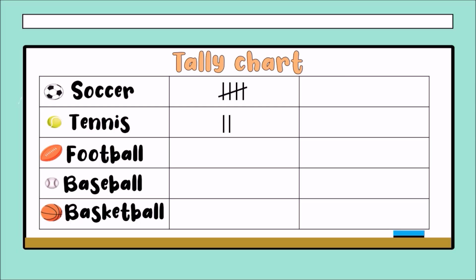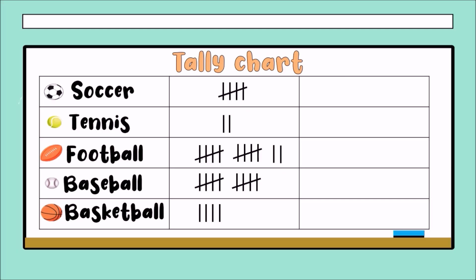How many chose tennis? One, two. Now continuing with football: one, two, three, four, five, six, seven, eight, nine, ten, eleven, and twelve — twelve students chose football. Continuing with baseball: one, two, three, four, five — diagonal — six, seven, eight, nine — diagonal — and ten. And basketball: one, two, three, four, five — diagonal — six, seven, eight, nine.